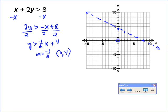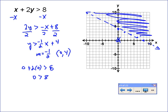So I'm going to try (0,0). If I plug in (0,0), I get 0 plus 2 times 0, and I can very easily see that 0 is not greater than 8. So (0,0) is false. That means everything on that side of the line is false, so we shade the other side. That's the solution - that entire region above the dashed line.